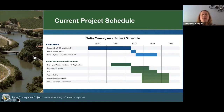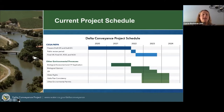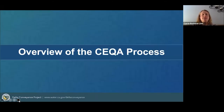Concurrently, we're starting work on the other permitting processes. We are starting to work on a biological assessment to comply with the Endangered Species Act and an incidental take permit application for the California Endangered Species Act. We're planning to submit those around the same time as the public draft EIR release, and then the fishery agencies will work on a biological opinion and ITP into 2023. We're also starting some of the early work towards change in point of diversion for our water rights, delta plan consistency, and other environmental permits, with the main work of those in 2023 and 2024.